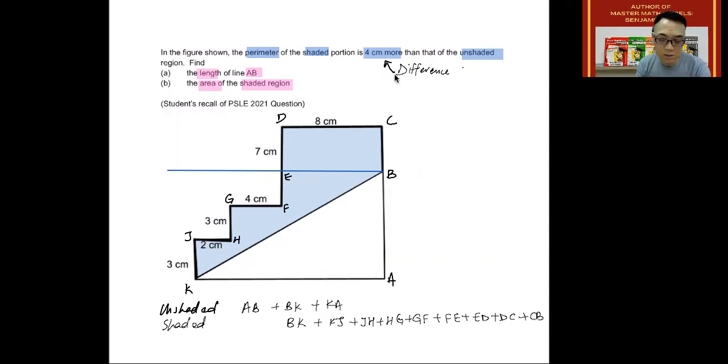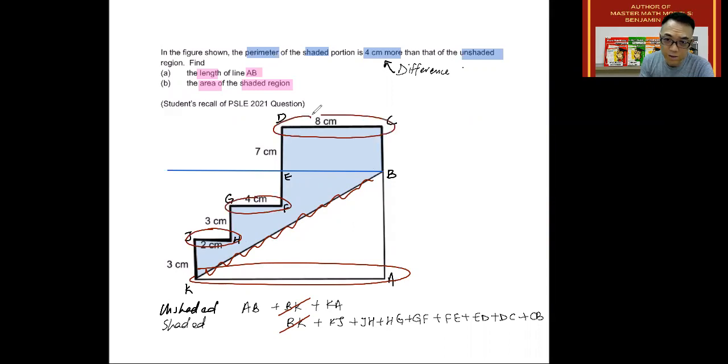And now we need to eliminate things that are the same. So what do I mean by things that are the same? Well, first things first, we know that the line BK here is actually shared by two shapes, the shaded and the unshaded. And so this is the first thing we will eliminate. So I'm going to eliminate BK with BK.